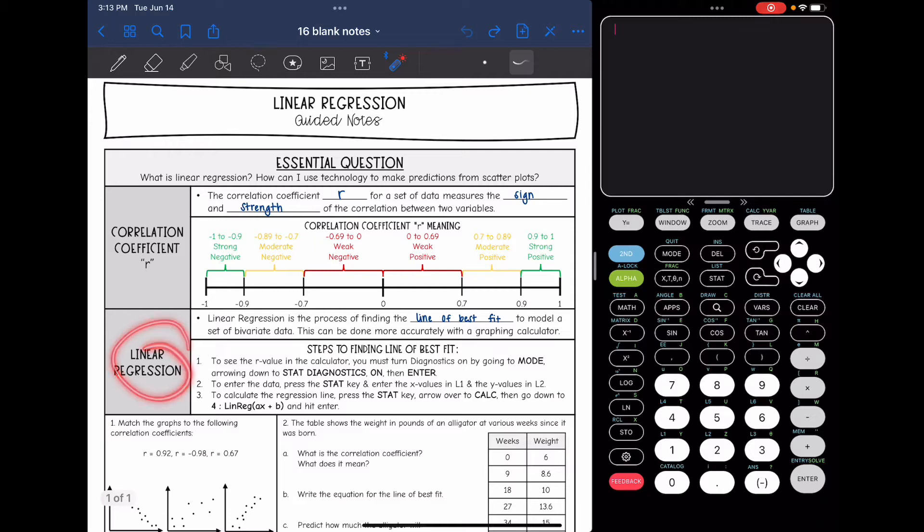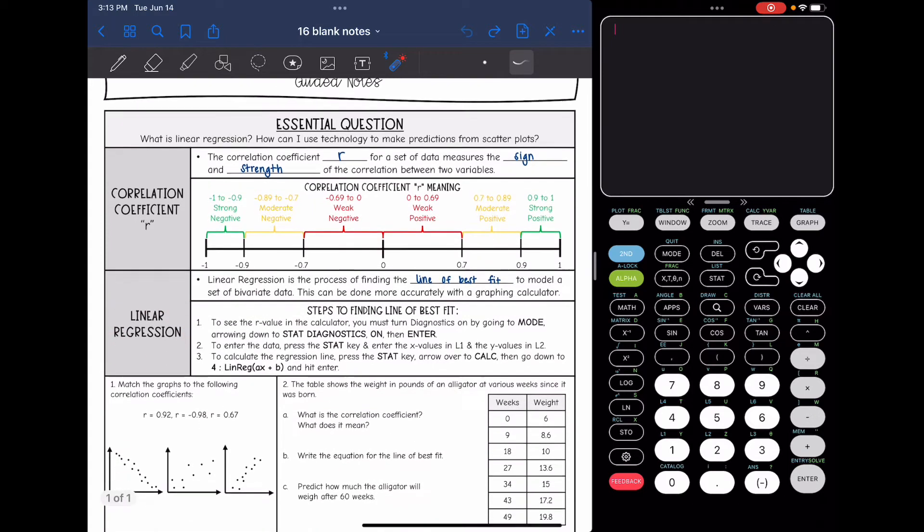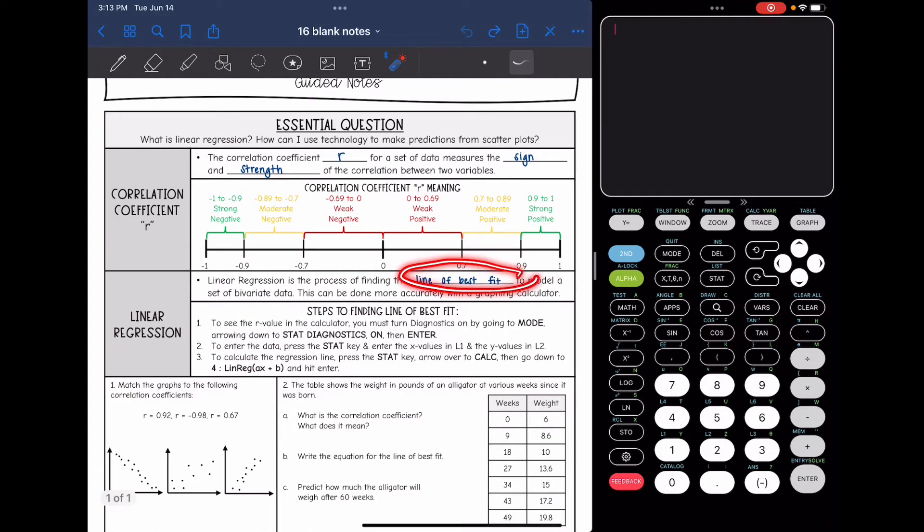Linear regression is the process for finding the line of best fit to model a set of bivariate data, and we do it with the graphing calculator because it's more accurate. The first thing we need to do is tell our calculator we want to see R, the correlation coefficient. We have to turn the diagnostics on by going to mode, and then we're going to go to stat diagnostics and make sure that is on.